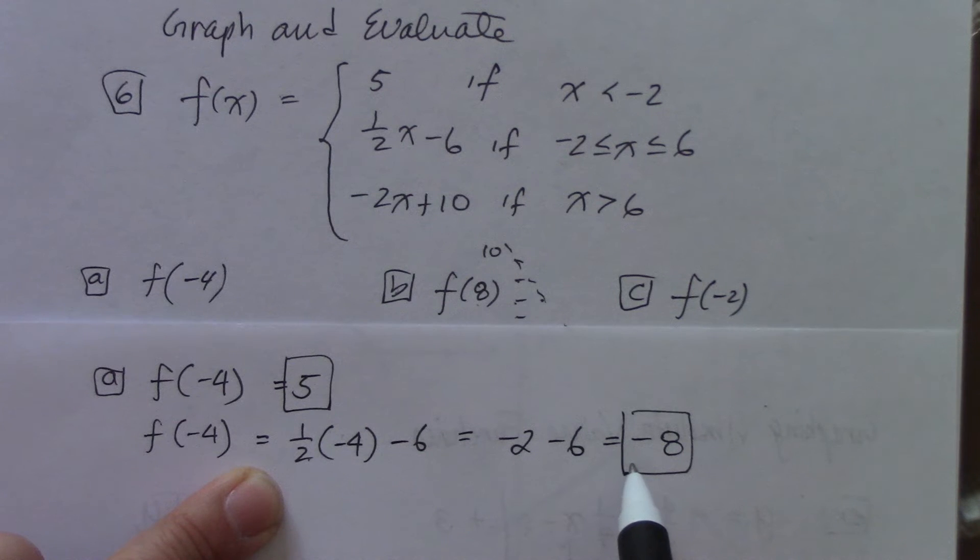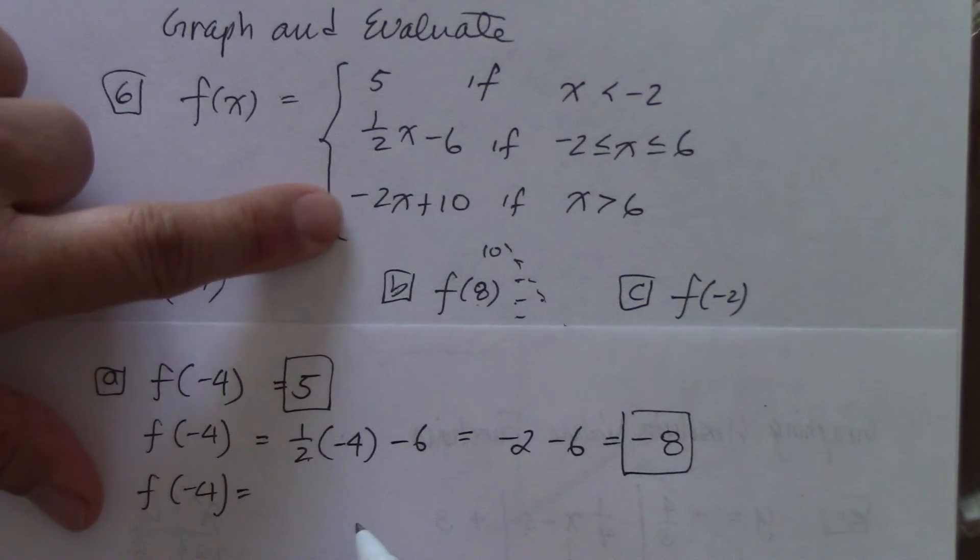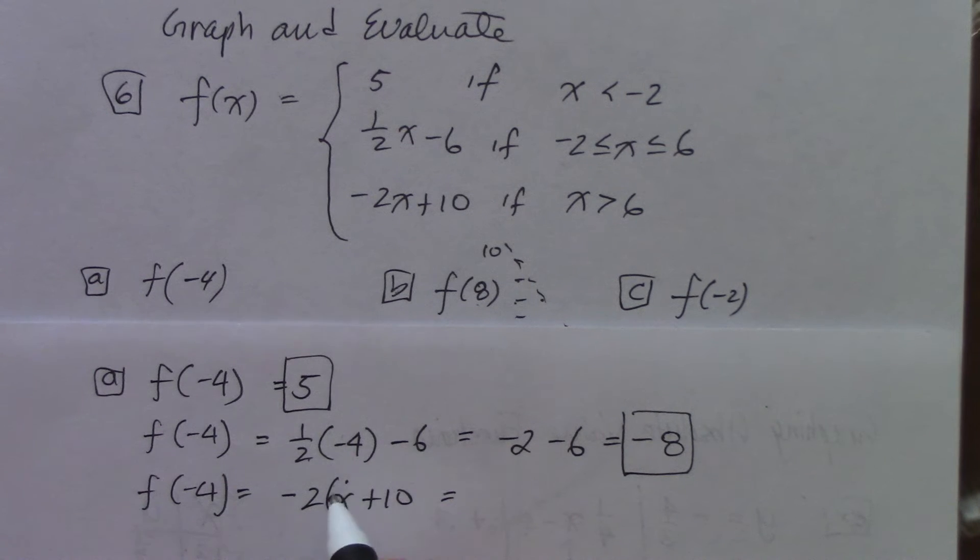So half of negative 4 is negative 2, so therefore that's going to become negative 8. And that's all you do. You just need to plug it in. And now take that f of negative 4 again, but put it onto a third function.